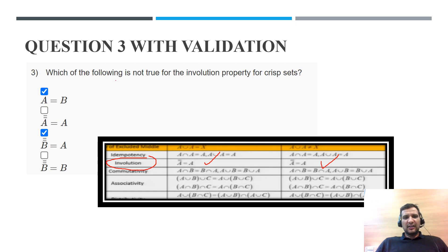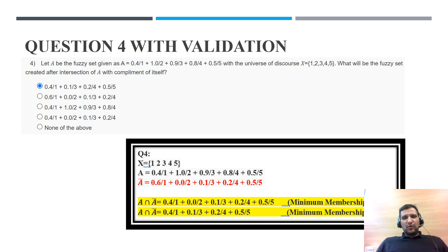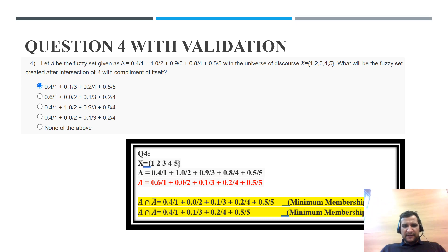Since the question asks which is NOT true, the correct answers are: A equals B, and B double-complement equals A. These are correct options because it is a multiple-select type question, so options A and C are correct. Questions 4 to 10 are of similar type, so I explain them with an example in a separate section.